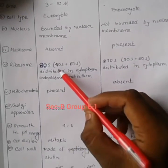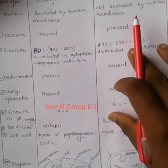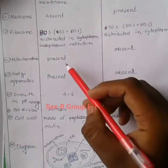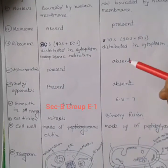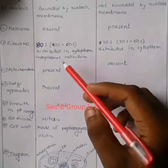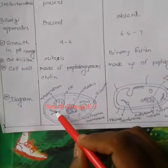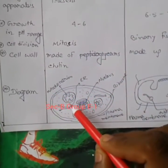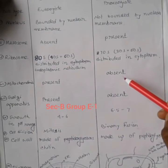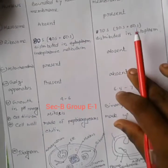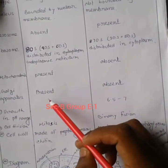Here we observe the 40S plus 60S type in fungi. Mitochondria is the powerhouse of any kind of cell. Mitochondria is present in the fungal cell, but in bacteria there is no mitochondria present.